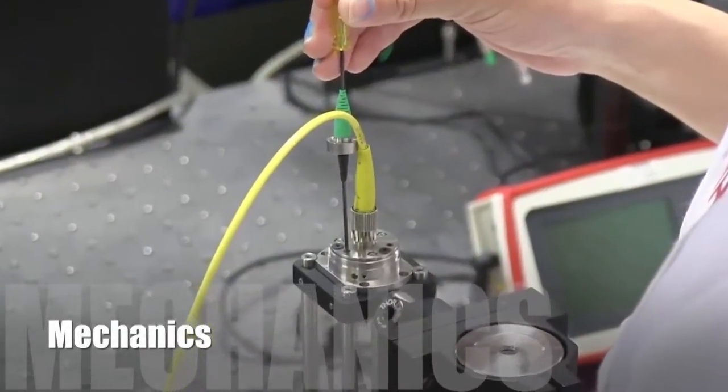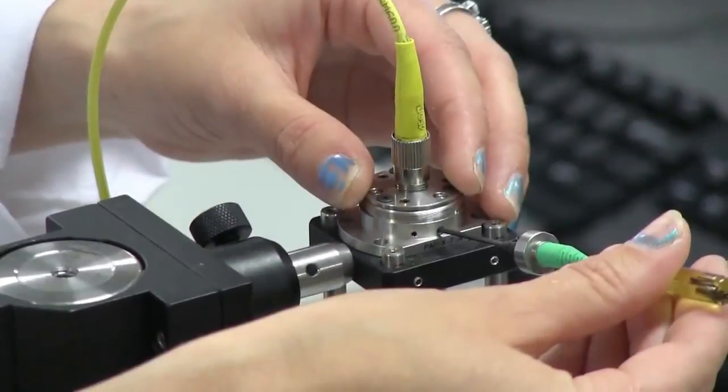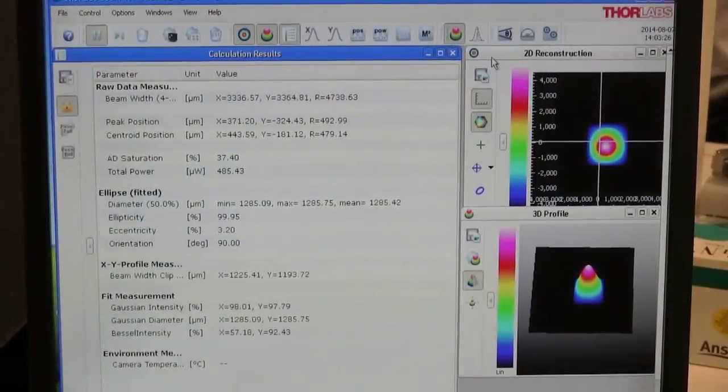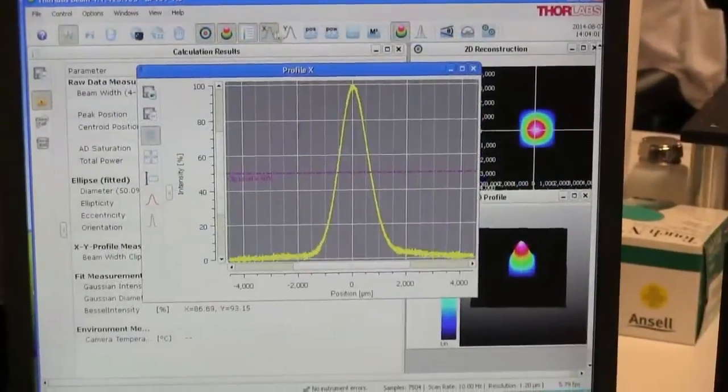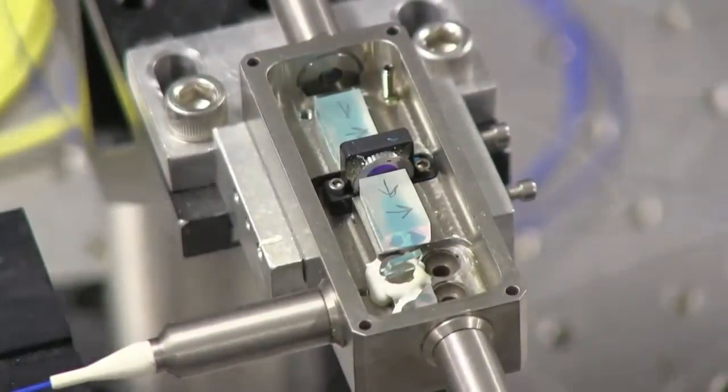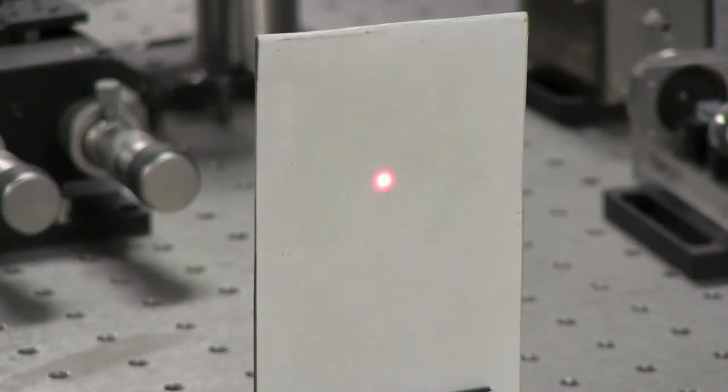Thorlabs offers a line of mechanical components to support our broad offering of fiber and patch cables. All collimator alignment is performed to exacting beam size requirements. Component testing is done using all Thorlabs parts. These components allow Thorlabs fiber to be seamlessly integrated into a variety of experimental setups.